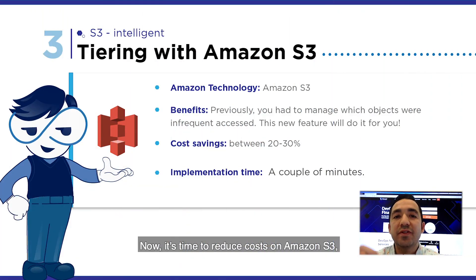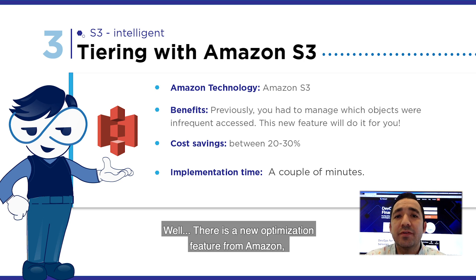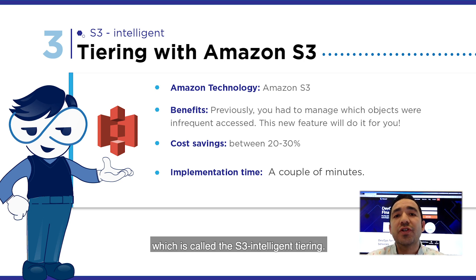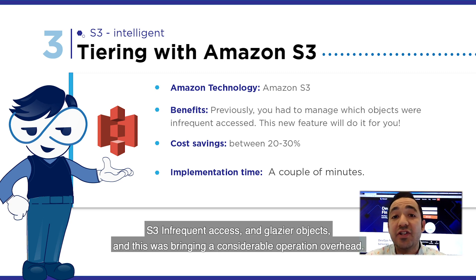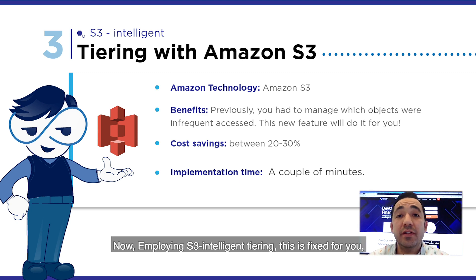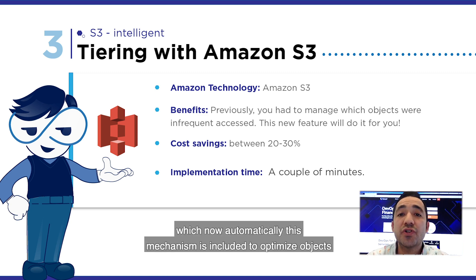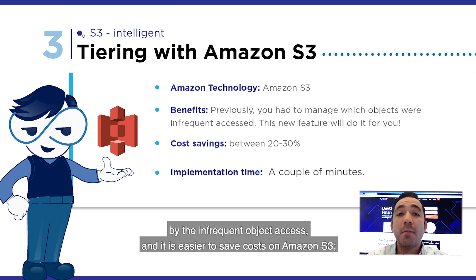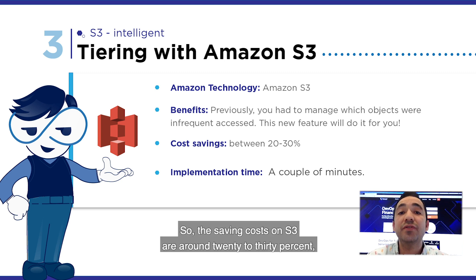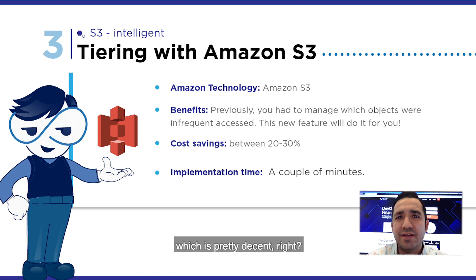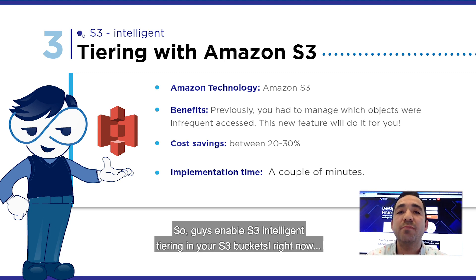Now it's time to reduce costs on Amazon S3. Who doesn't use this revolutionary service? There is a new optimization feature from Amazon called S3 Intelligent Tiering. In previous years, to save costs, you had to manage the entire object lifecycle between S3, S3 Infrequent Access, and Glacier — and this brought considerable operational overhead. Now, employing S3 Intelligent Tiering, this is handled for you. This mechanism optimizes objects by frequent object access patterns. Savings on S3 are around 20% to 30%, which is pretty decent. Enable S3 Intelligent Tiering in your S3 buckets right now.